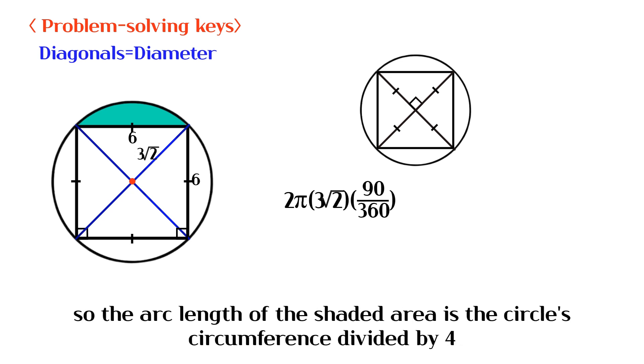So the arc length of the shaded area is the circle's circumference divided by 4.